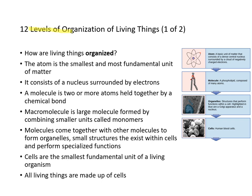Among living things there are 12 levels of organization. The smallest is the atom — the most fundamental unit of matter, consisting of a nucleus surrounded by electrons. A molecule is two or more atoms held together by a chemical bond. A macromolecule is a large molecule formed by combining small subunits called monomers. Molecules combine to form organelles, small structures found in cells.